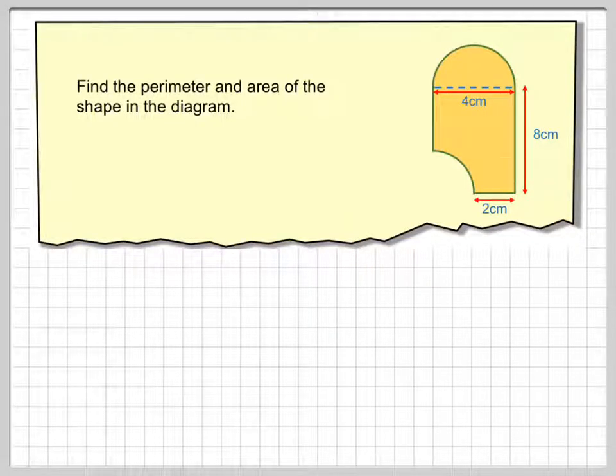In this video we've got a compound shape, so we're going to find its perimeter and the area of the shape, and the shape has semicircles in it as well.